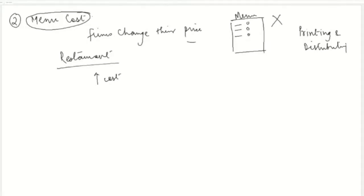Menu cost is not limited to restaurant menus — it includes advertisement costs, catalogs sent to distributors, and all marketing materials. If your product price changes because of inflation, you have to redo advertisements with the new price, which is a huge expense for any firm. Menu cost is the second cost any firm must bear under expected inflation.